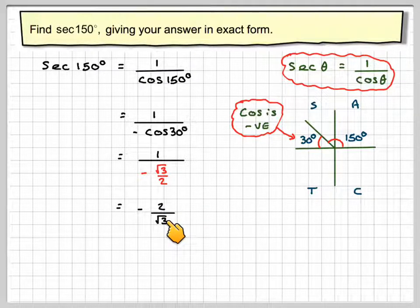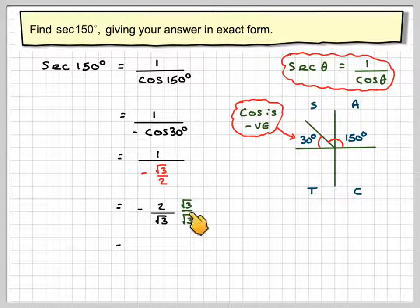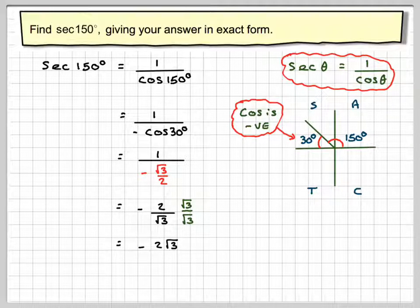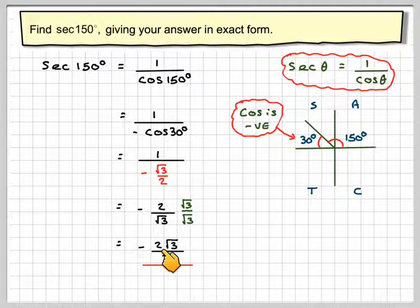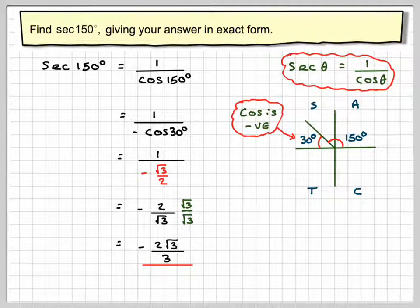Now normally we don't write the square root sign on the bottom, we rationalize the denominator by multiplying by root 3. So we have to do the same to the numerator, so it becomes minus 2 root 3, and root 3 times root 3 is 3. So the final answer is minus 2 root 3 over 3.